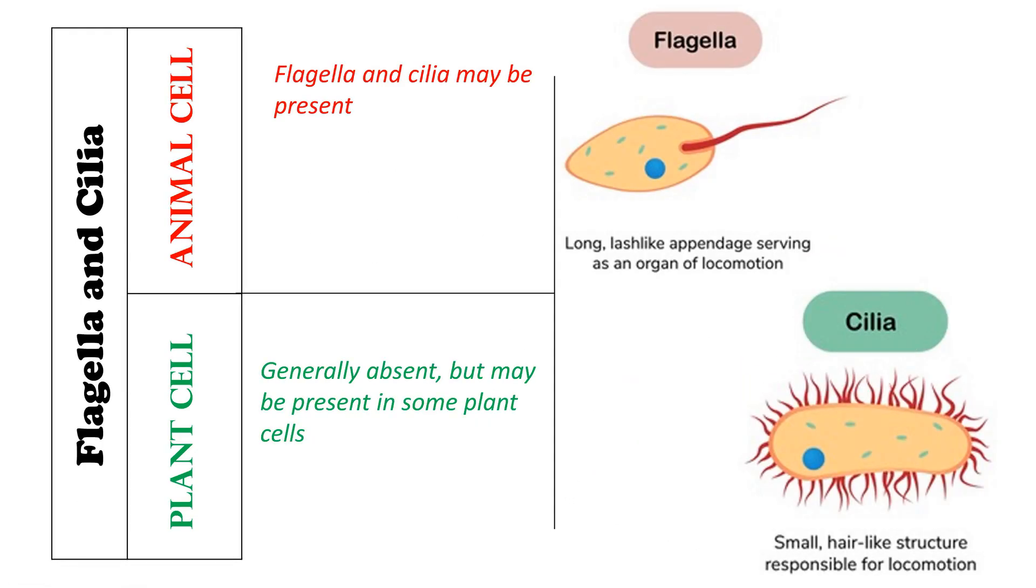In addition to this, few of the animal cells do have certain hair-like structures called flagella and cilia on their surface, and they help these animal cells in locomotion. And generally, cilia and flagella are absent in plant cells.